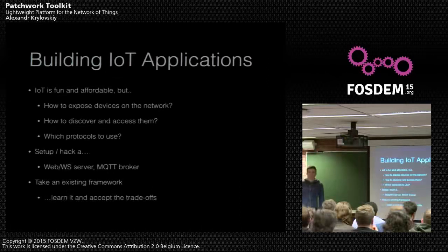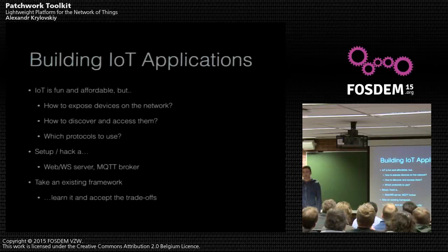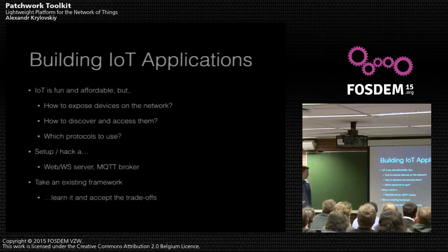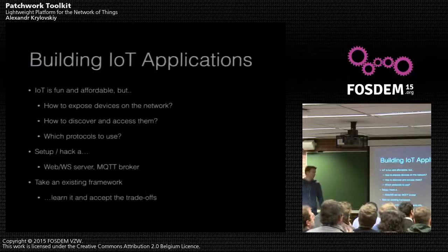Or you can take an existing framework - there are a lot of them, and Patchwork is obviously not the only one. The problem is all these frameworks, including Patchwork, have their own way of doing things. They provide their own APIs that you need to learn. And then you need to accept the tradeoffs. If you don't mind running a JVM with a dozen OSGI bundles on your Raspberry Pi, then you're probably fine, but you need to get to that point and accept it.